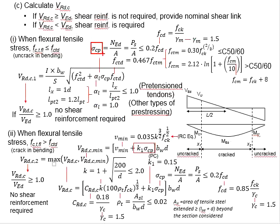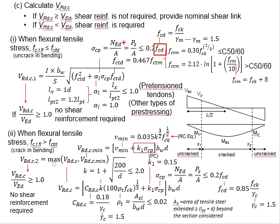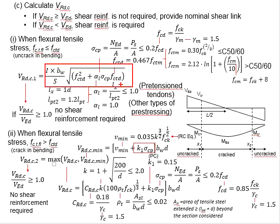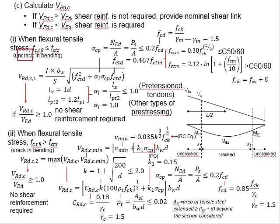Next, we need to determine sigma_cp, which is the compressive stress caused by the prestressing tendon. P is the total prestressing force acting on the member, and A represents the cross-sectional area of the section. The compressive stress due to the tendon is limited to 0.2 times fcd, where fcd is the design concrete strength calculated by dividing fck by the partial factor of safety of 1.5. Substituting all values into the equation, you are able to obtain VRdc for the uncracked concrete section.